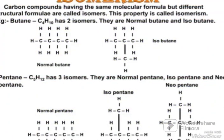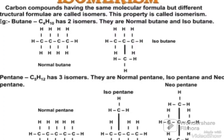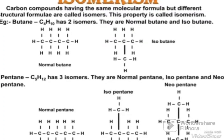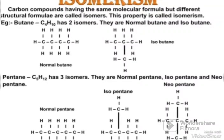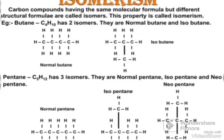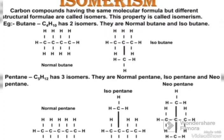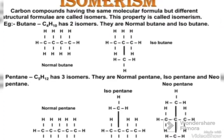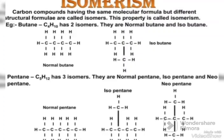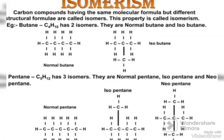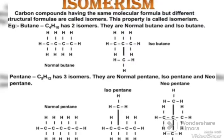When it comes to isomerism, carbon compounds that have the same molecular formula but different structural formulas are called isomers. This property is called isomerism. For example, butane (C4H10) has 2 isomers: normal butane and isobutane. In the diagram, you can see normal butane and isobutane.